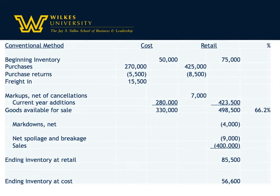When you add beginning inventory plus purchases, you get goods available for sale — at the cost rate used in the cost of goods sold formula, and also at the retail level. By taking $330,000 divided by $498,500, you get 66.2%. That's your cost-to-retail ratio, and this approach is called the conventional method.